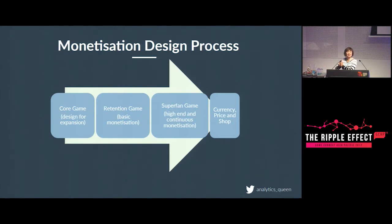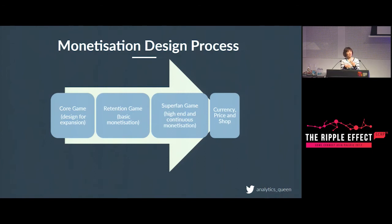Once you go through these three stages, then you think about your currency, your price, then your shop. By the way, shops are rarely where you actually sell. A lot of people think shops are where you sell, but in reality, where you sell is where the value is most apparent — where players need it most. Puzzle games often give you different item types at the beginning of a level, adjusted to that level specifically, because they know that's where you need it most. That's where you can start thinking about where to sell.